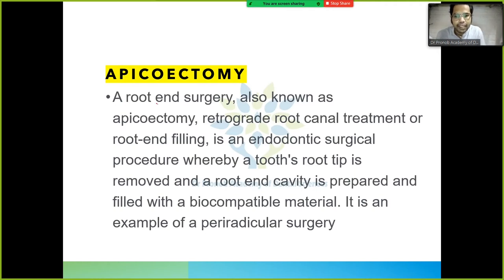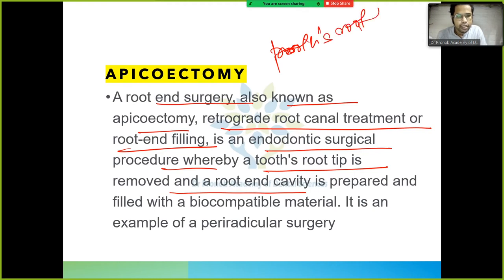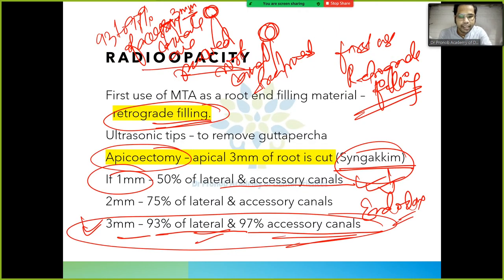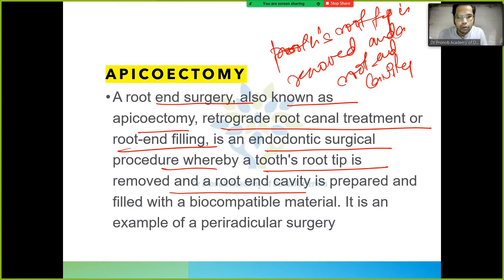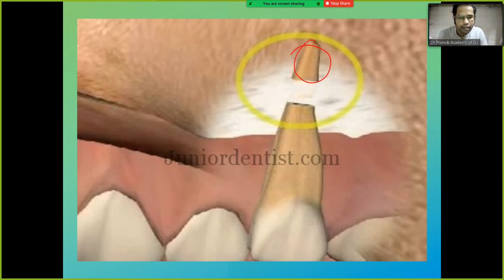Apicoectomy, also known as episectomy or retrograde root canal treatment, is an endodontic surgical procedure whereby the tooth root tip is removed and a root-end cavity is prepared. It is an example of periradicular surgery. Three mm of the root is cut, removing 93–97% of accessory canals. The cavity is then filled with a biocompatible material.